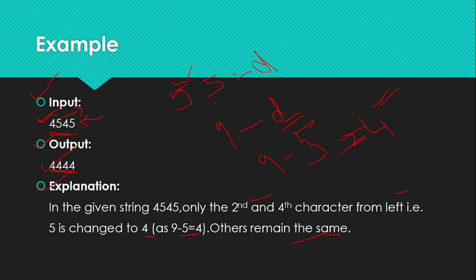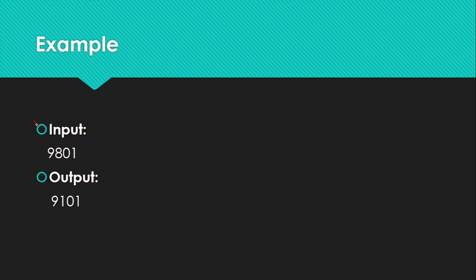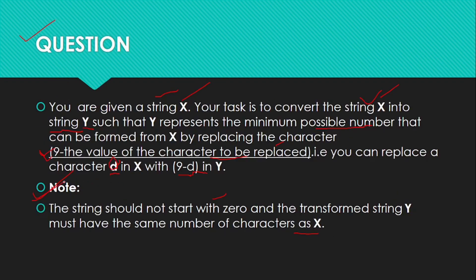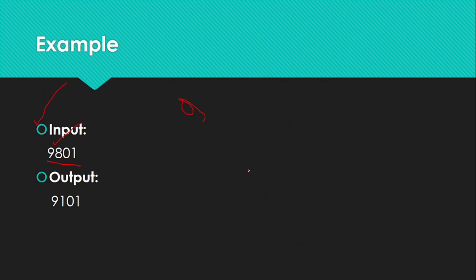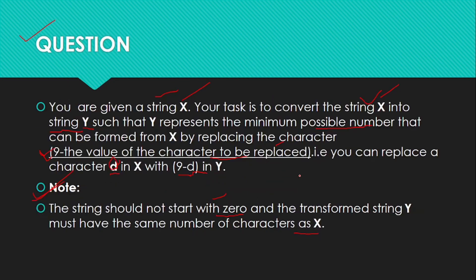You have to find out the maximum character in string format. For example, if 9 is the maximum number — remember the note says the string should not start with zero, and 9 minus 9 gives zero — so you cannot use 9. In that case, take the next maximum number, which is 8. 9 minus 8 gives 1, so you replace 8 with 1 and get the output.